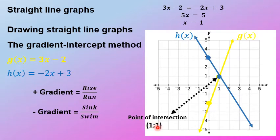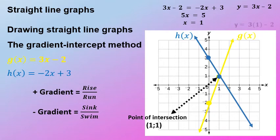To find y, take x equals 1 and replace it into either formula. I chose to replace it into g(x): y equals 3x minus 2, so y equals 3 times 1 minus 2, which gives y equals 1. So I can work it out mathematically by equating the two equations, giving me the same coordinate I read off the graph: (1, 1).